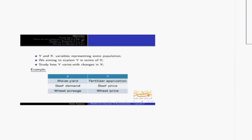Assume we have two variables representing some population, which we call Y and X, and we're trying to explain Y in terms of X. X is an explanatory variable that explains Y, and we try to study how Y varies with a change in X. A simple example: we want to determine the demand of beef, which can be explained by the price of beef, or maize yield can be explained by fertilizer application.